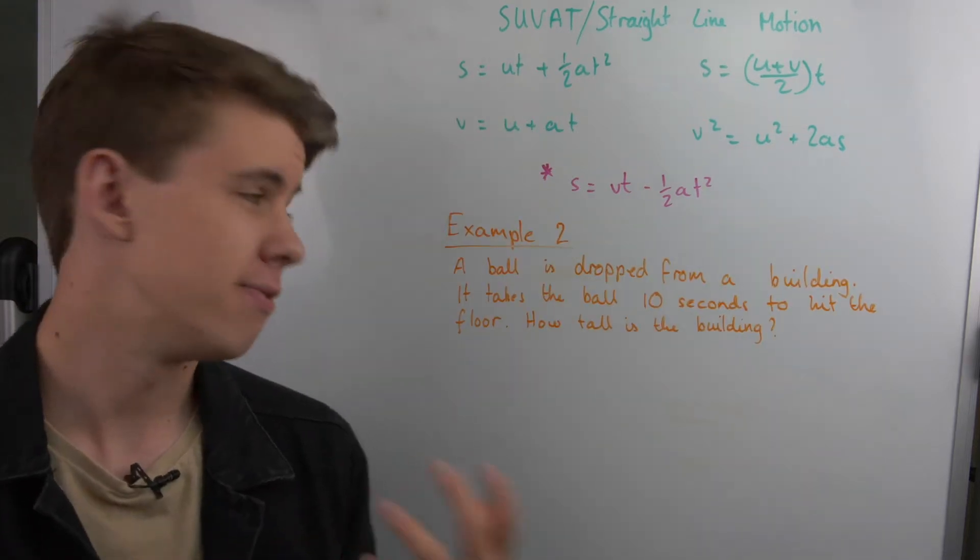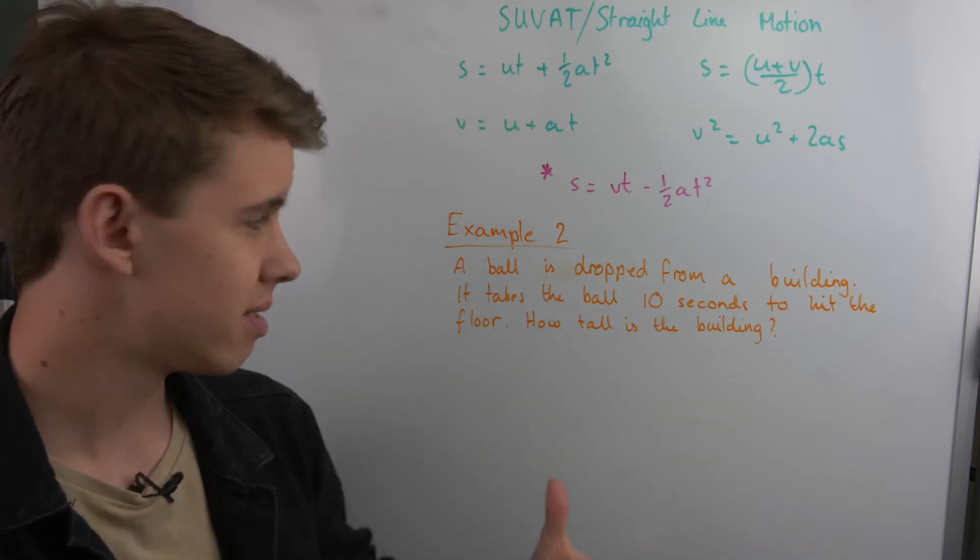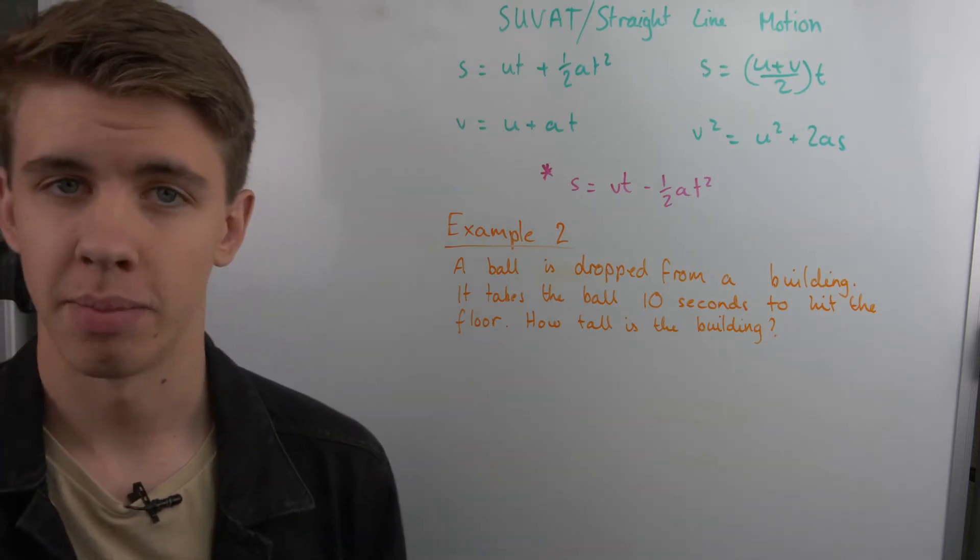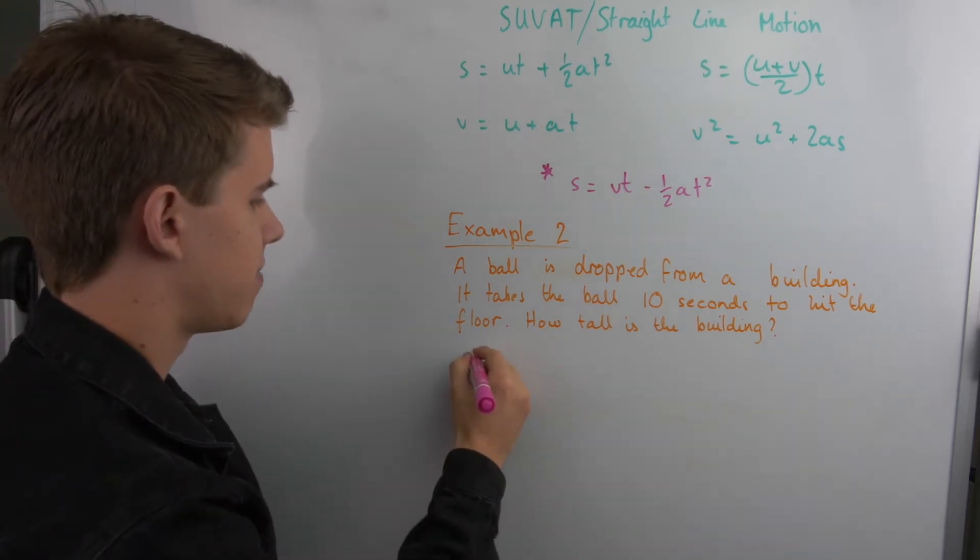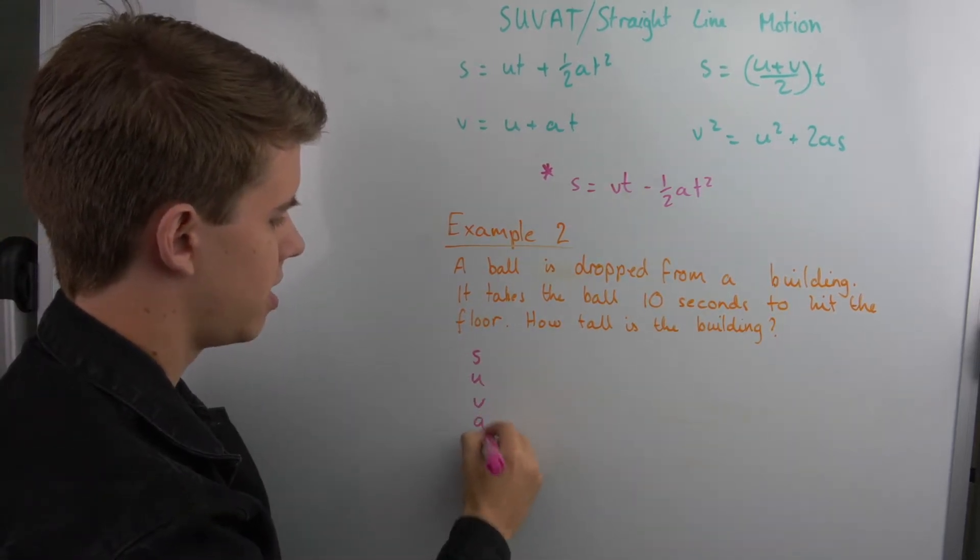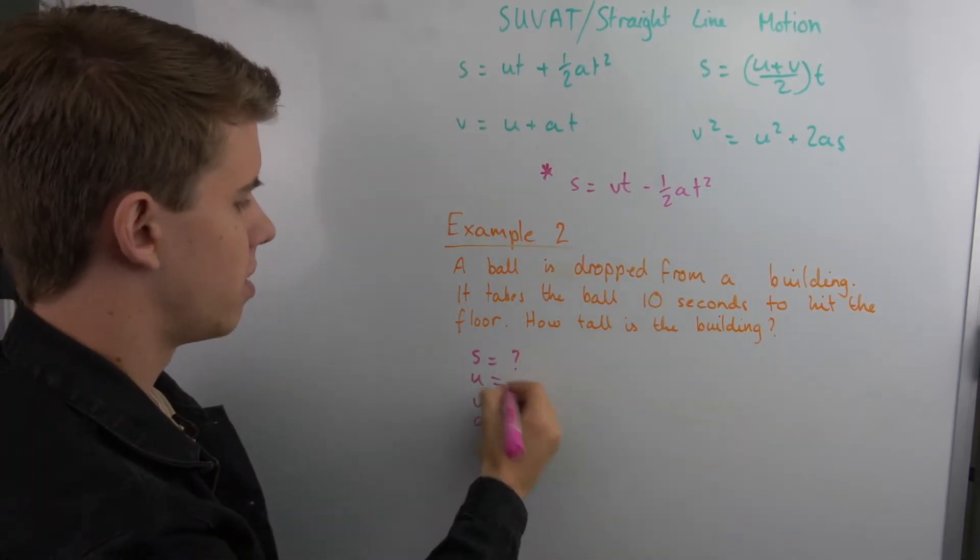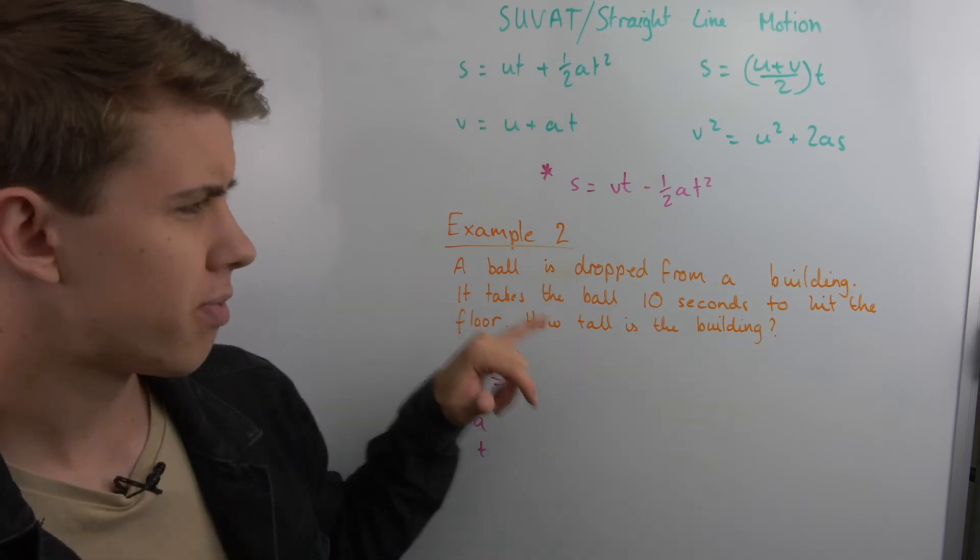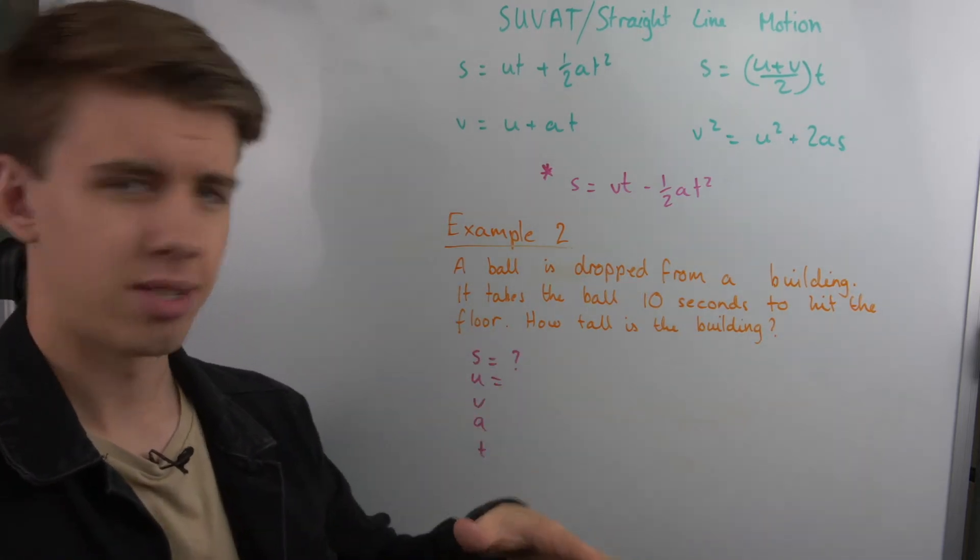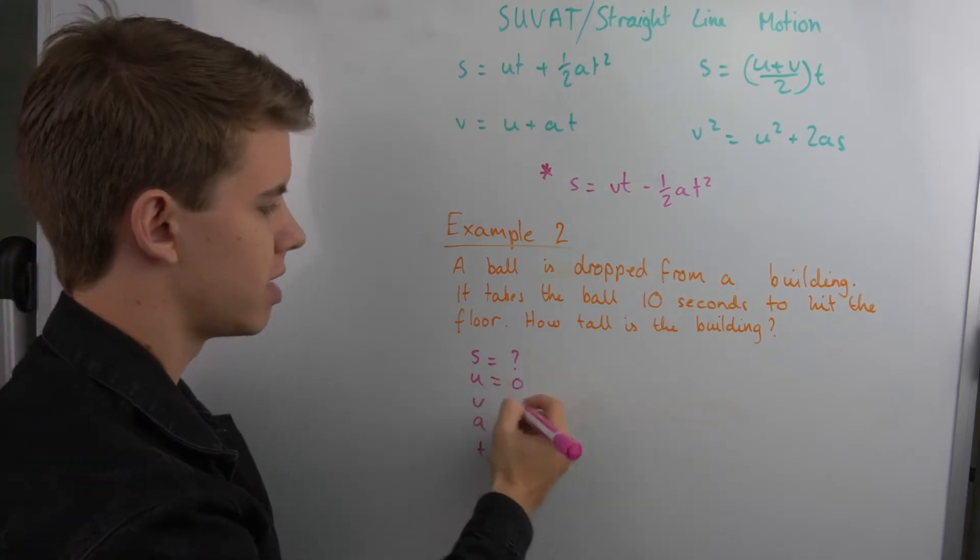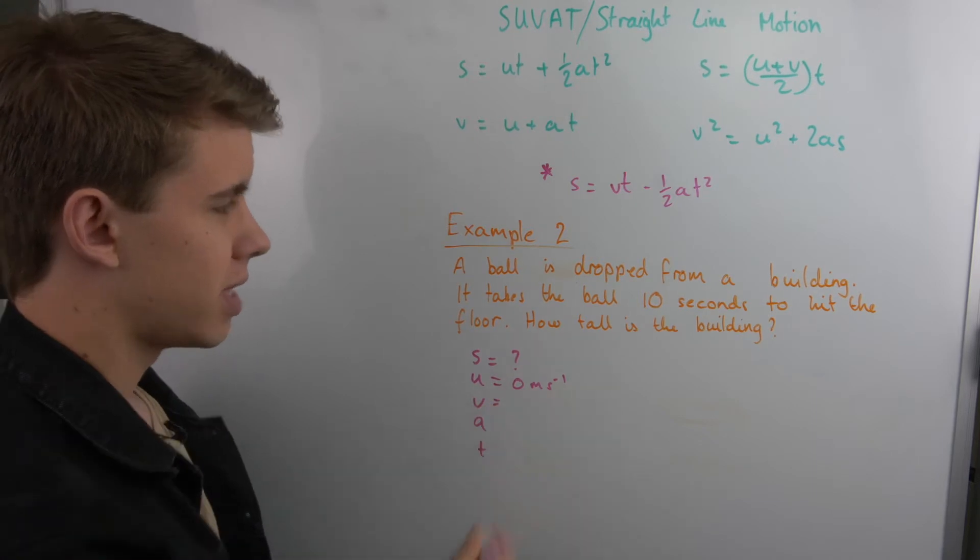So let's take an example of a vertical question and see how we would solve that. A vertical motion. We have a ball being dropped from a building. It takes the ball 10 seconds to hit the floor. How tall is the building? So we can list our SUVAT again. So we have S, U, V, A, T. S is what we're trying to work out. U, we know it's being dropped from a building, so you can infer that it's being dropped from rest. So we say that our initial velocity is always going to be zero meters per second. Our final velocity, we don't know.